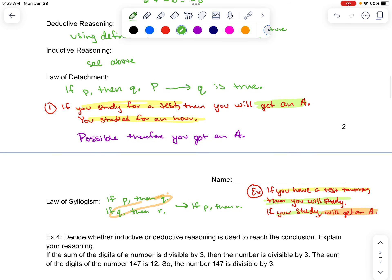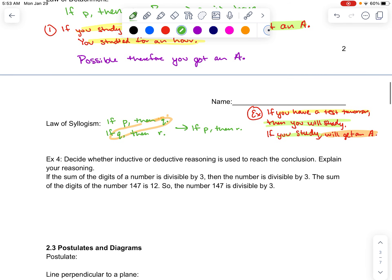Something also is, I will not tell you the law of detachment. I will not write down on the board. The law of detachment is this. The law of syllogism is this. So, you need to know the correct order between the two. Alright. Last example. Decide whether inductive or deductive reasoning is used to reach the conclusion. Explain your reasoning. So, if the sum of the digits of a number is divisible by 3, then the number is divisible by 3.